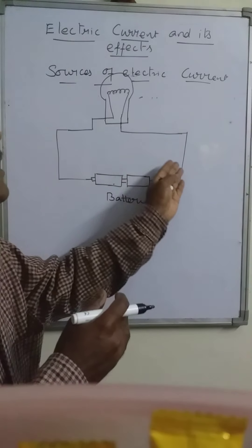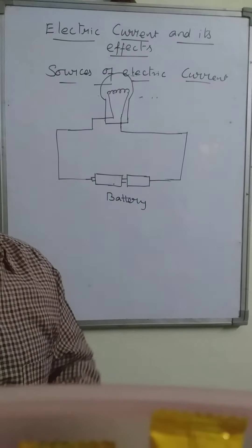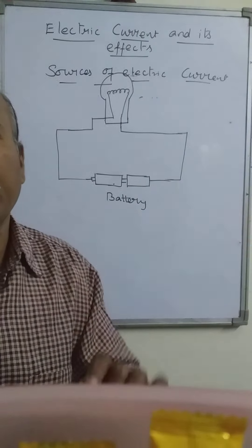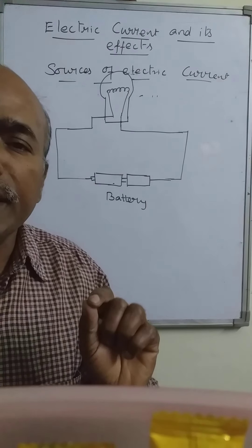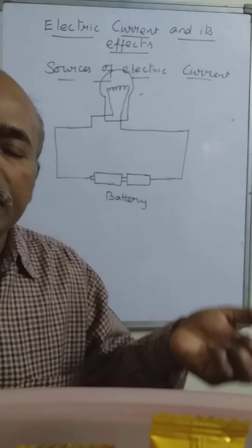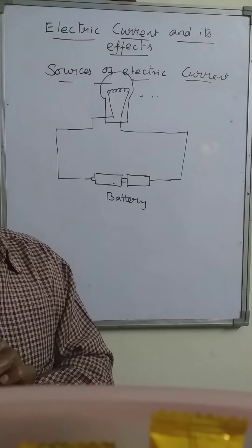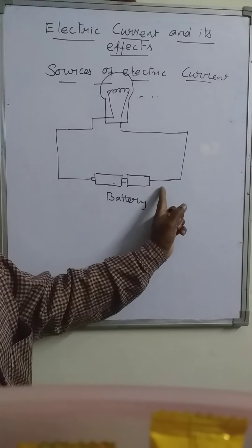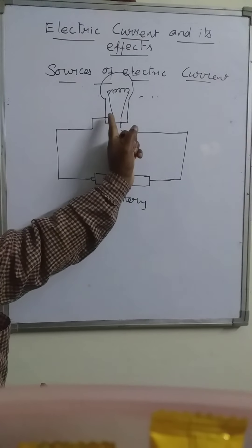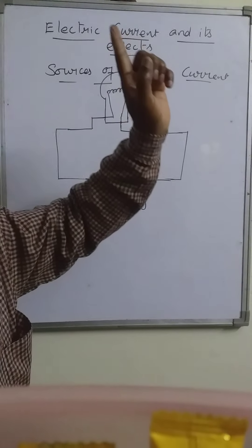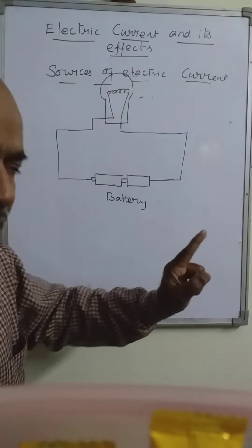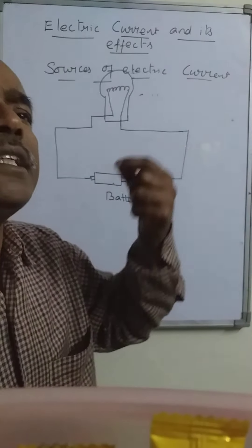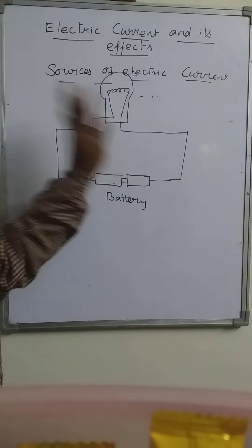The brightness increases as the amount of electric current increases. When the current increases, brightness increases; when current decreases, brightness also decreases. Here we are increasing the number of cells one by one, and the brightness also increases. That means by increasing the number of cells, the amount of current increases.